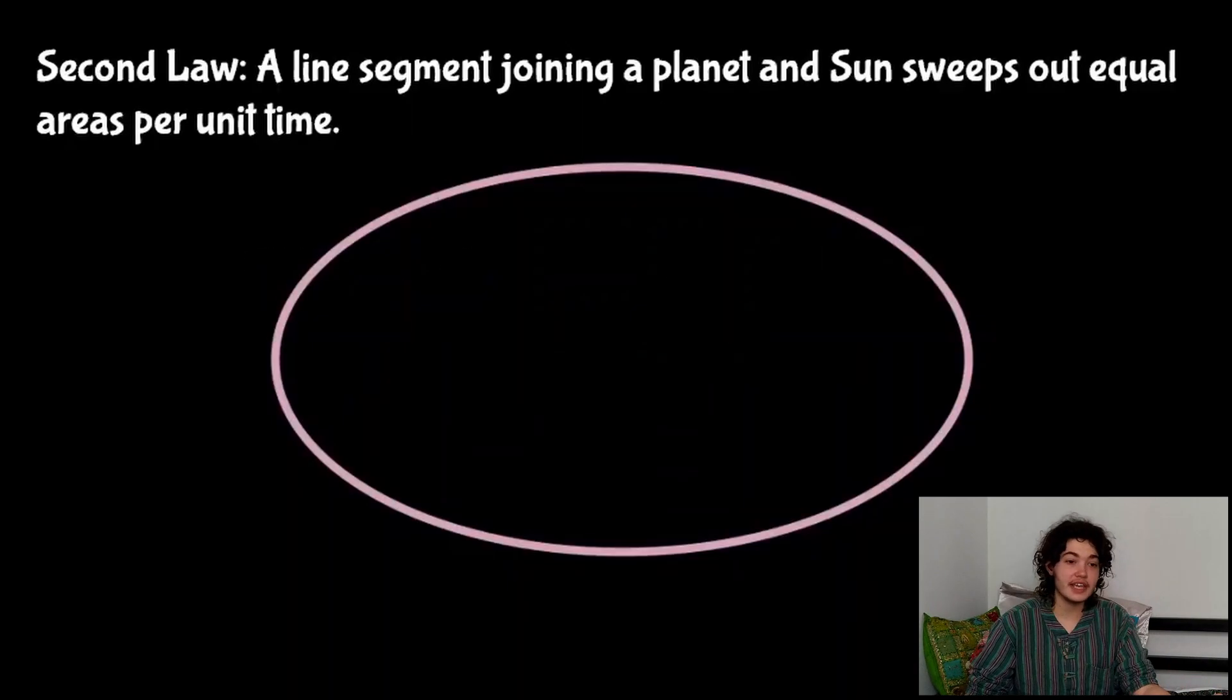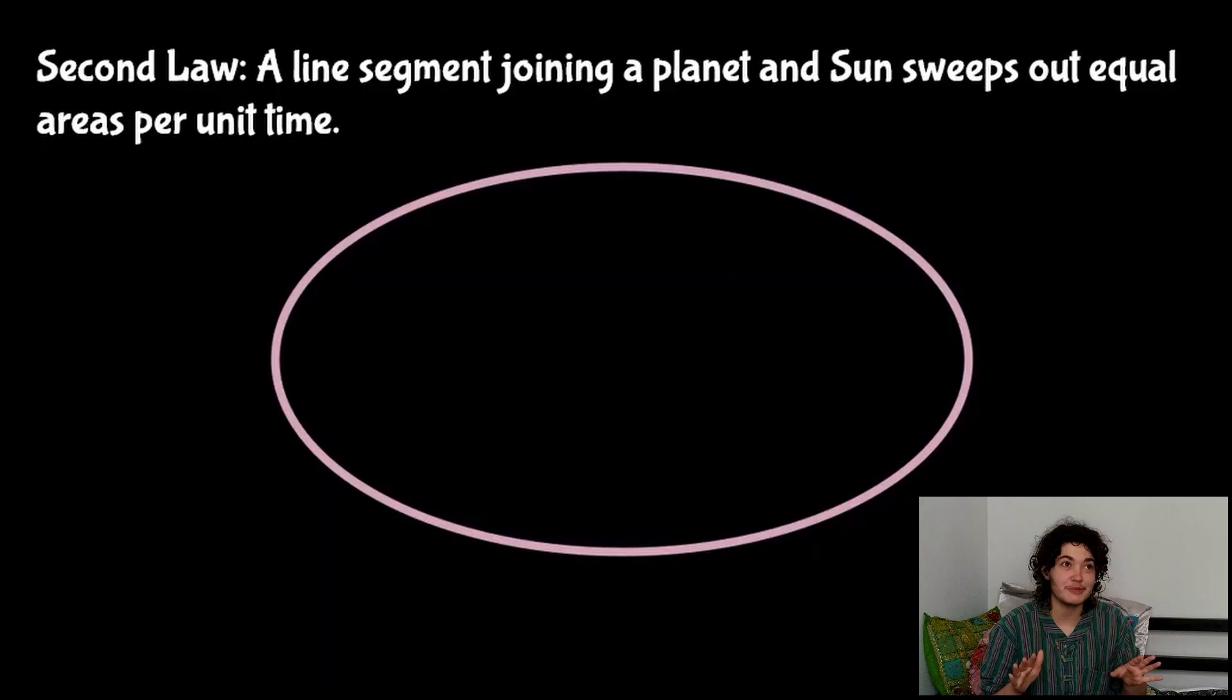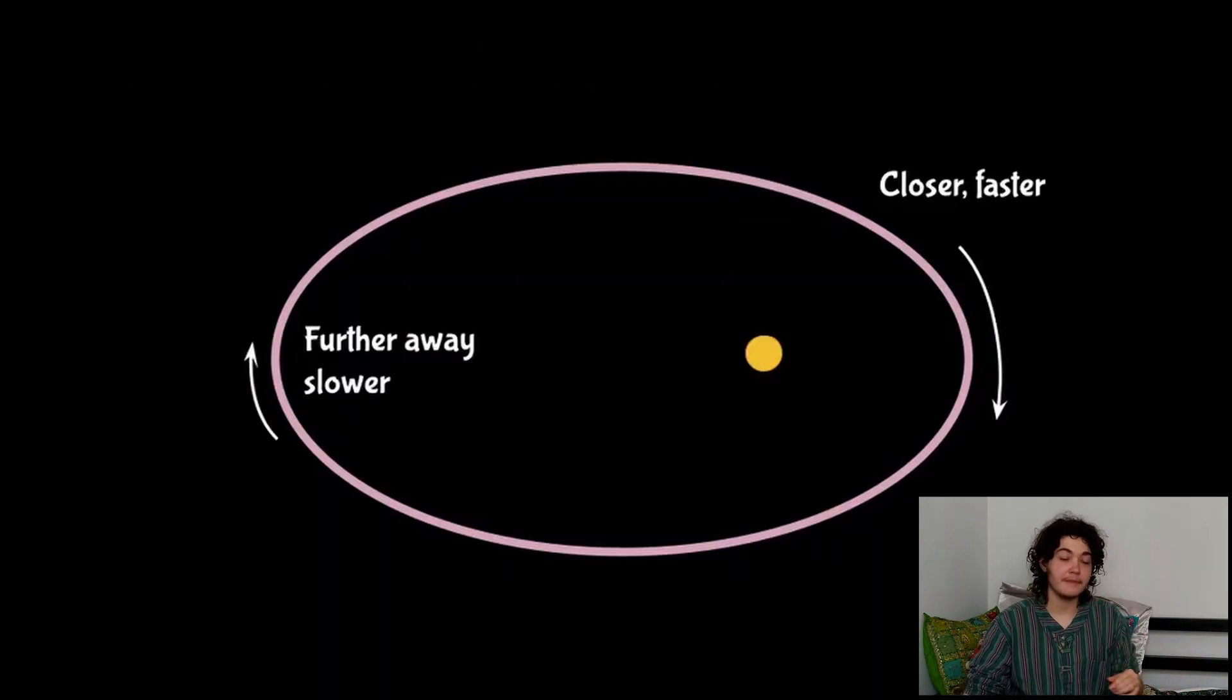Anyway, let's get on to the second law. The second law states that a line segment joining a planet and the Sun sweeps out equal areas per unit time. That sounds like absolute gibberish, I know, but it's not a very complicated law and it's actually the shortest of all the laws. If we put the Sun there, what we can see is if a planet is actually orbiting the Sun, when it's at its perihelion, the closest bit, that is when it will be speeding up and going very fast because it's much closer to the Sun and it's going to have more gravitational attraction essentially. In order to actually counteract that gravitational attraction it needs to speed up.